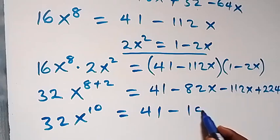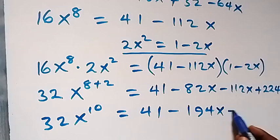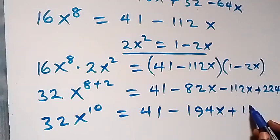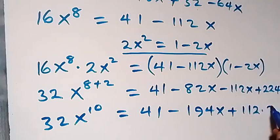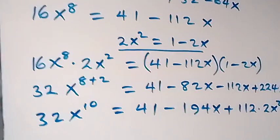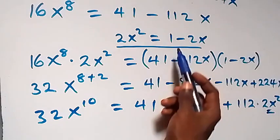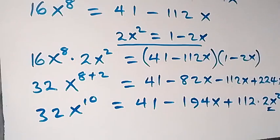Continuing the expansion, minus 112x times minus 2x gives plus 224x². So 32x¹⁰ equals 41 minus 82x minus 112x plus 224x². We recall that 2x² equals 1 minus 2x, so 224x² equals 112 times (1 minus 2x).